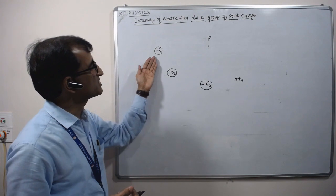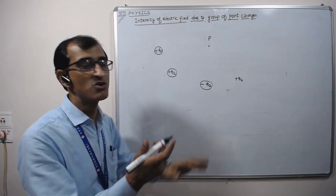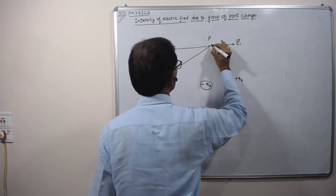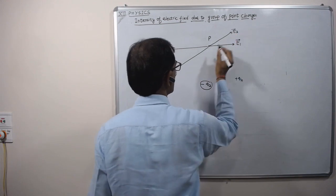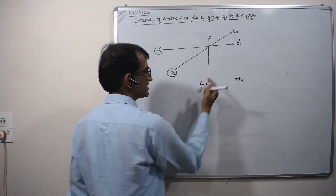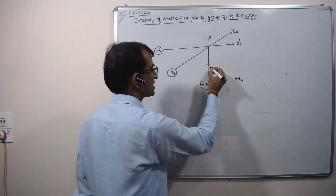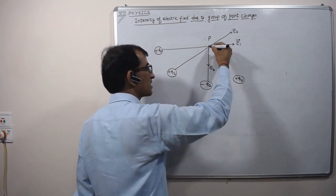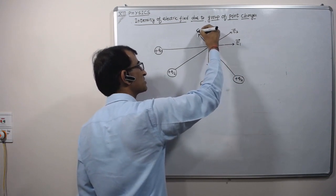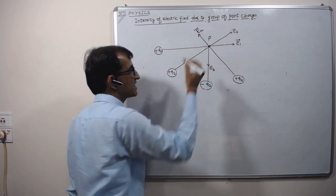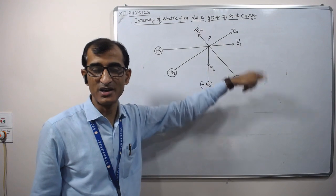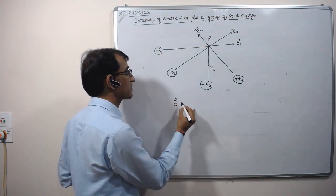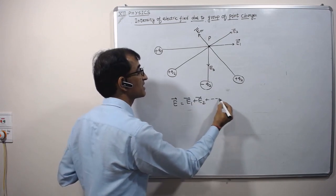The intensity due to a positive charge at the given point will be in the outward direction. So, electric field due to q1 in outward direction is e1 vector; due to q2 along the line joining in outward direction is e2 vector; due to minus q3, since it is a negative charge, intensity will be towards the charge, e3 vector; and due to the nth charge qn, away from the charge, en vector. So resultant intensity at P will be the vector sum of all individual intensities: E at P equals e1 vector plus e2 vector plus ... plus en vector.